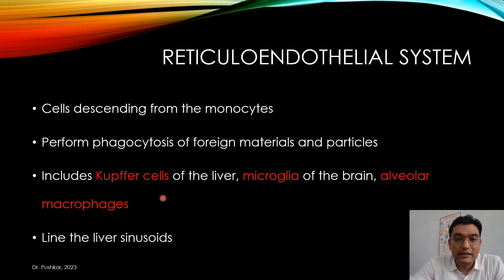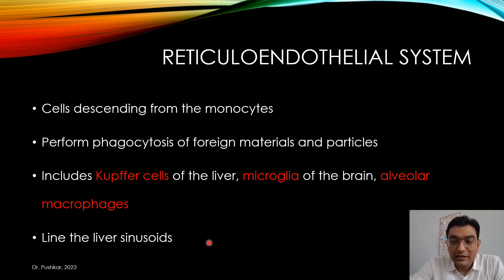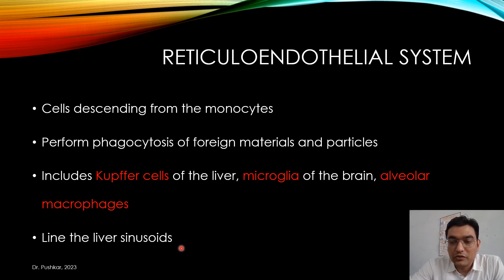The Kupffer cells in the liver line the liver sinusoids. All blood entering the liver passes through millions of sinusoids, and those sinusoids have many reticuloendothelial cells lining them. These cells phagocytose foreign materials, particles, bacteria, and antigens that try to enter the body.